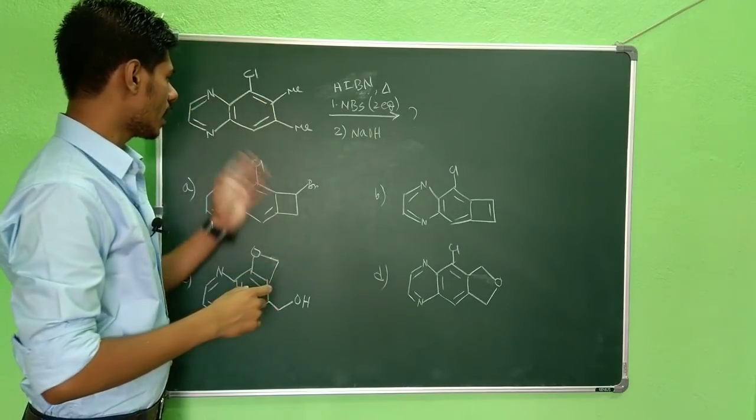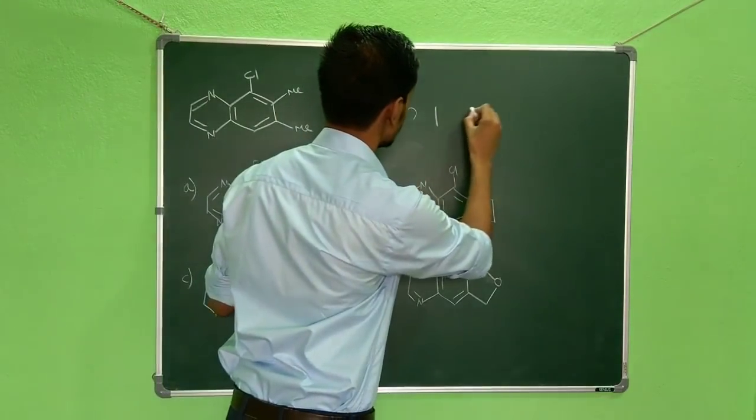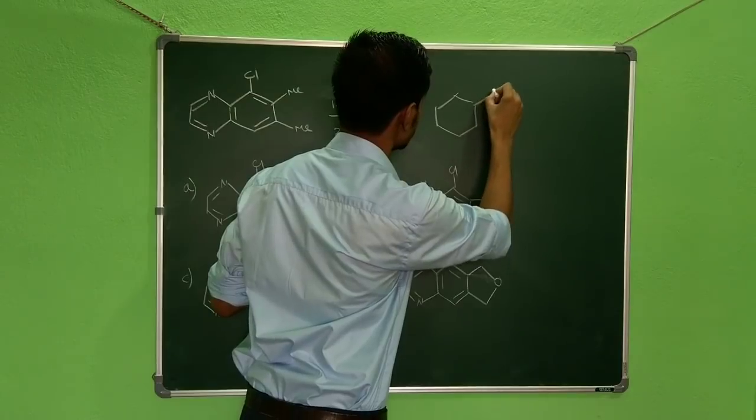Now, if the allylic bromination occurs in this particular molecule, you will get this.